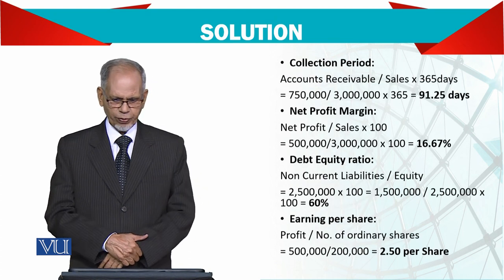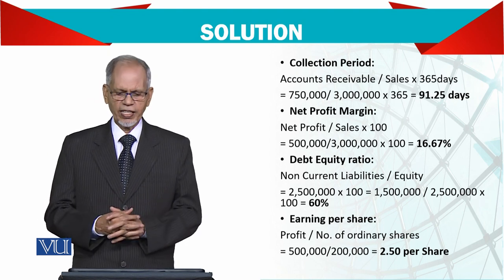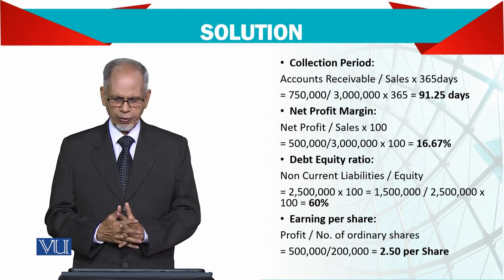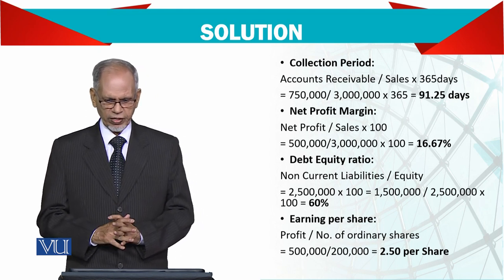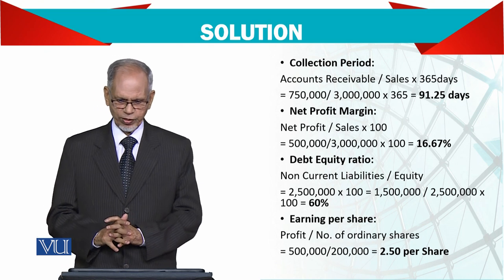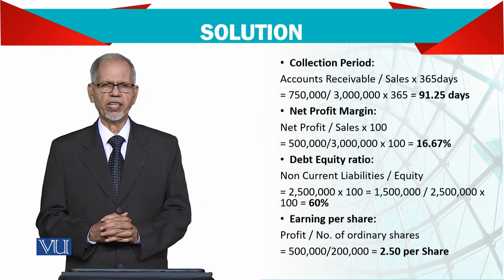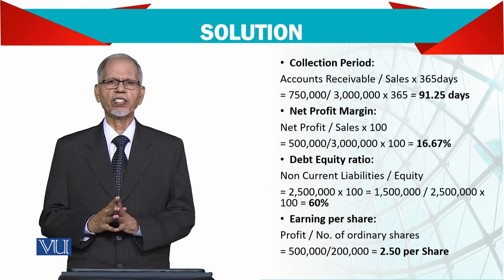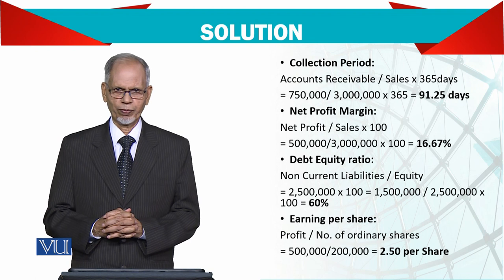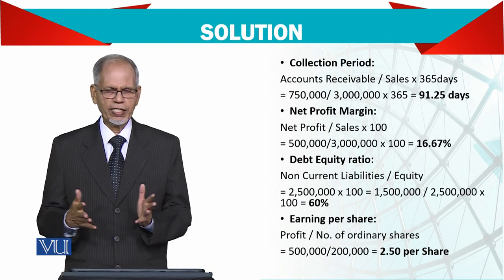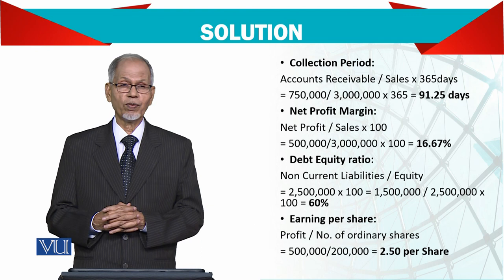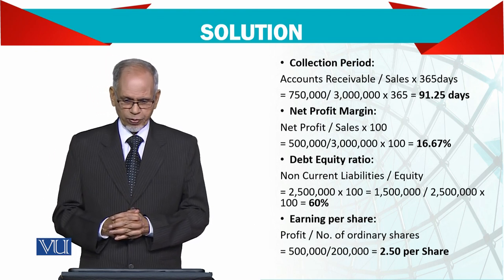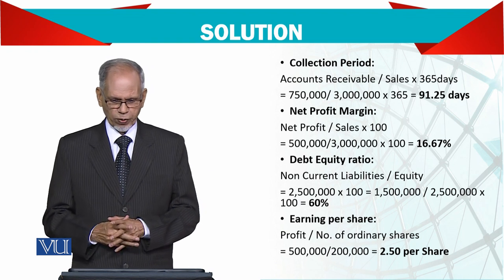Next है collection period। Account receivable को divide करें sales से और multiply करें 365 days से। तो 750 divide by 300,000 — यह आपका 91 days आता है, जो बहुत high figure है। यह depend करता है credit policy पर; अगर allowed 60 days है तो यह 31 days extra है, which is not recommended।